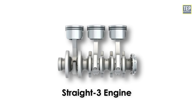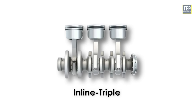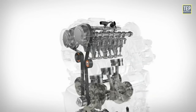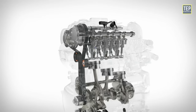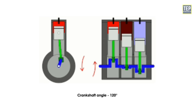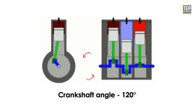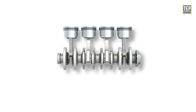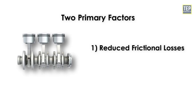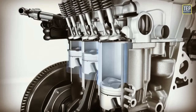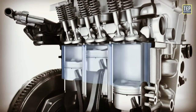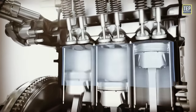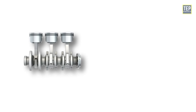A straight three engine, also called an inline triple or inline three, is a three-cylinder piston engine where cylinders are arranged in a line along a common crankshaft. Straight three engines typically use a crankshaft angle of 120 degrees, resulting in an evenly spaced firing interval. A three-cylinder engine is much more fuel efficient than a four-cylinder engine of the same size, due to two primary factors: reduced frictional losses and lighter weight. Since there is one cylinder less, the frictional losses caused by metal surfaces coming into contact within the engine block are lesser, translating to more force production for less fuel.